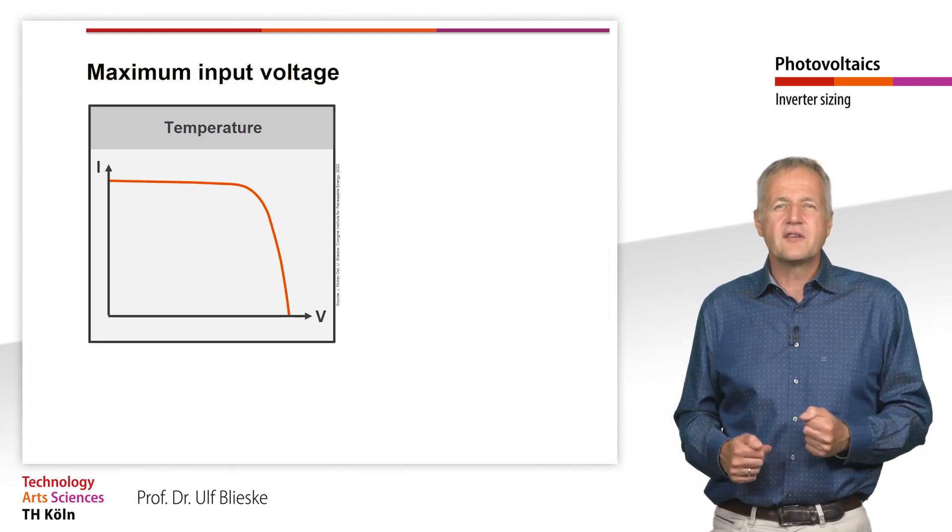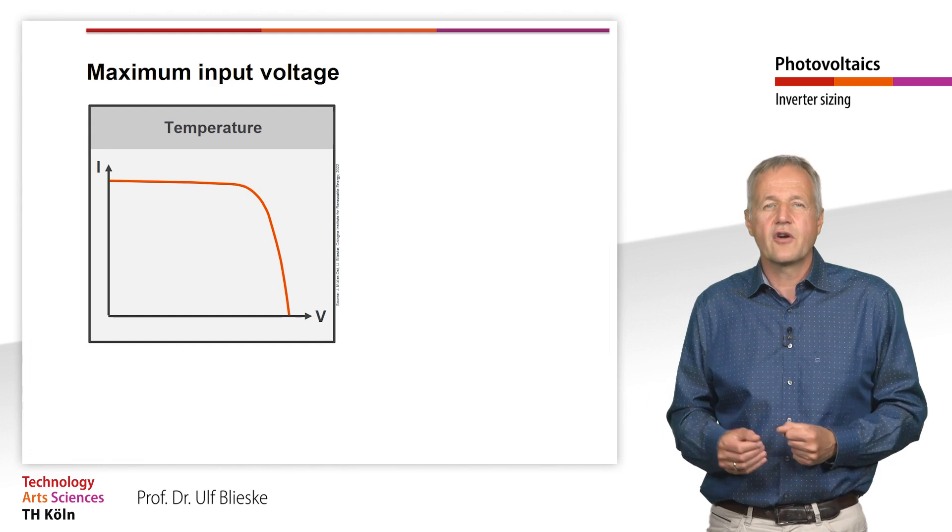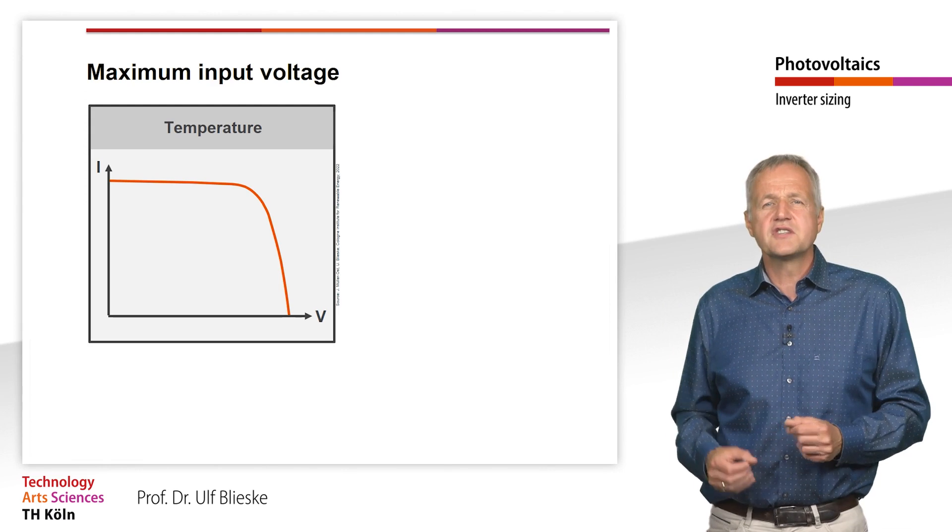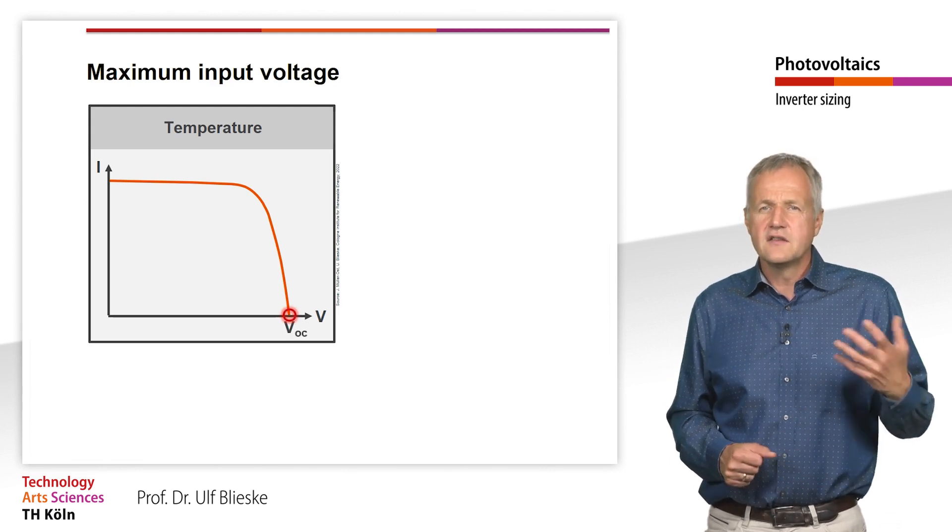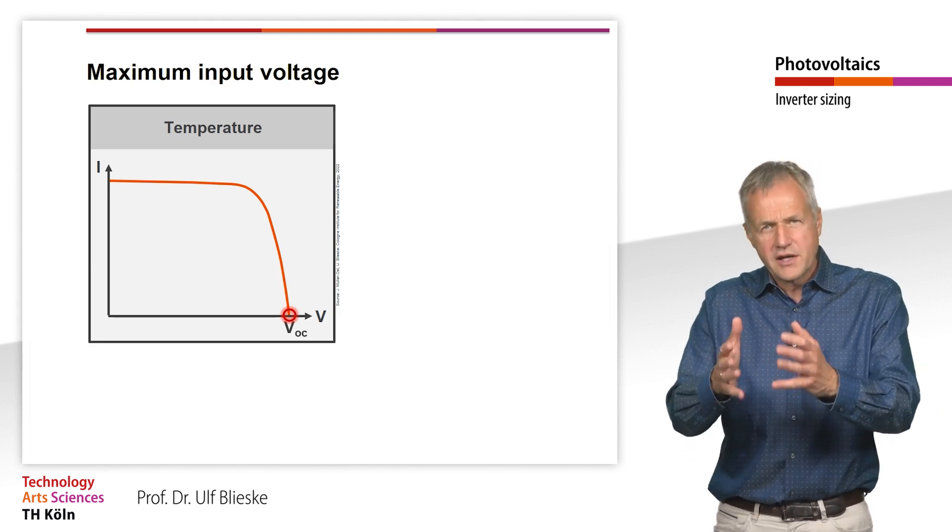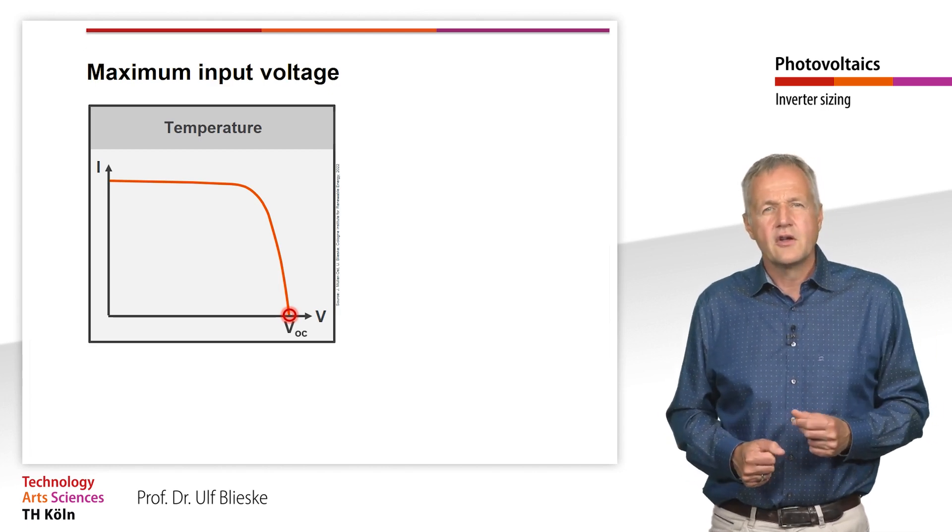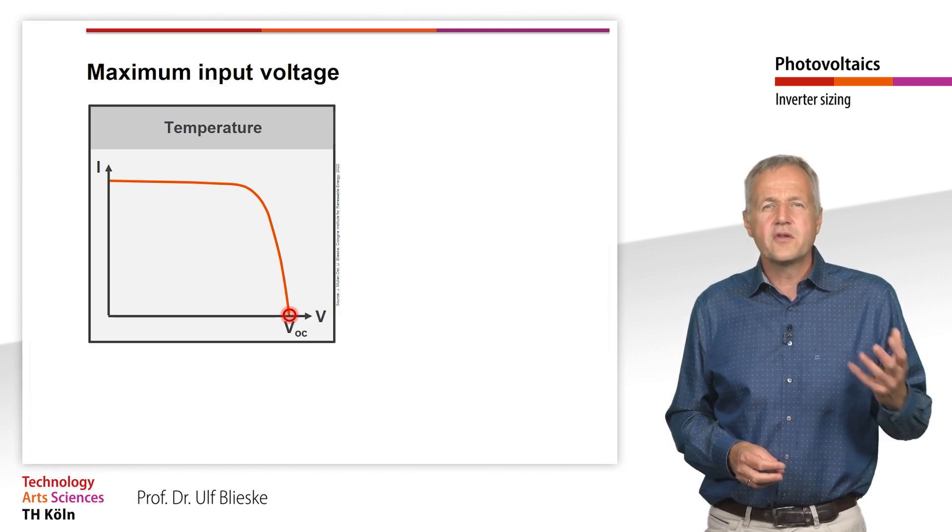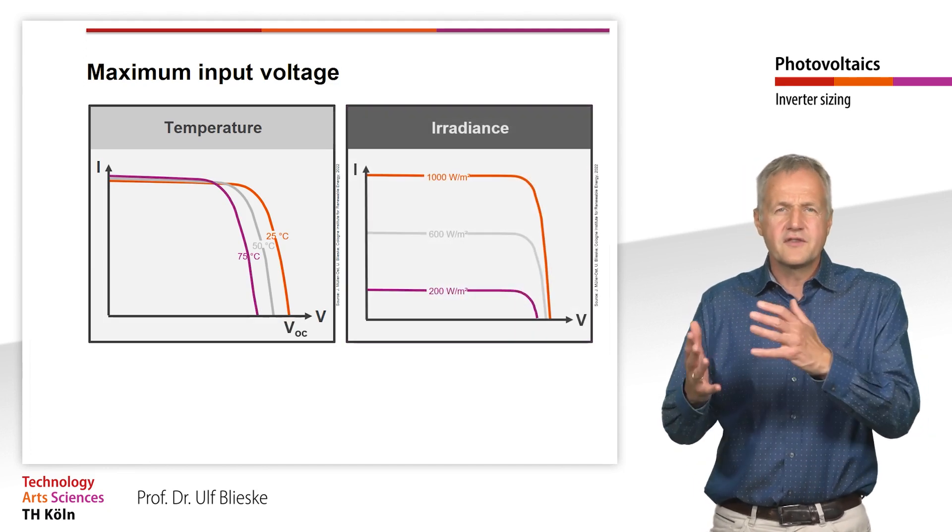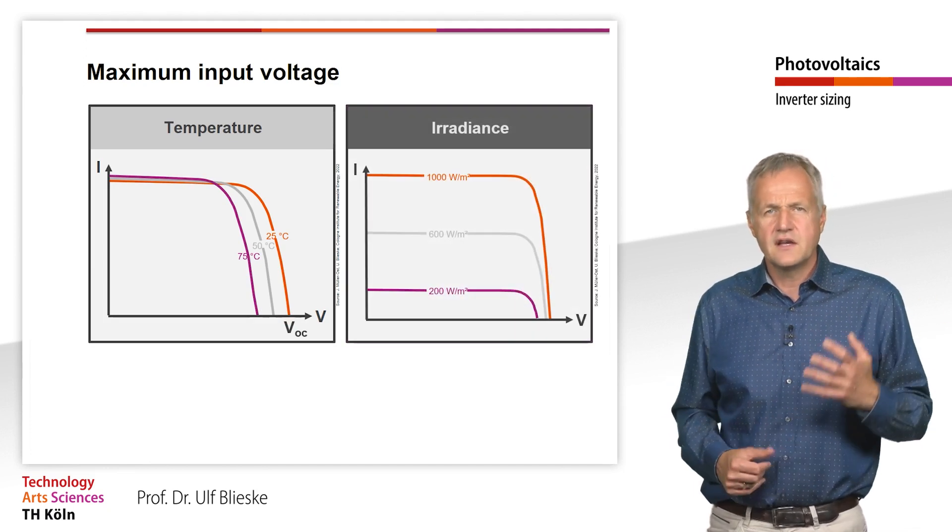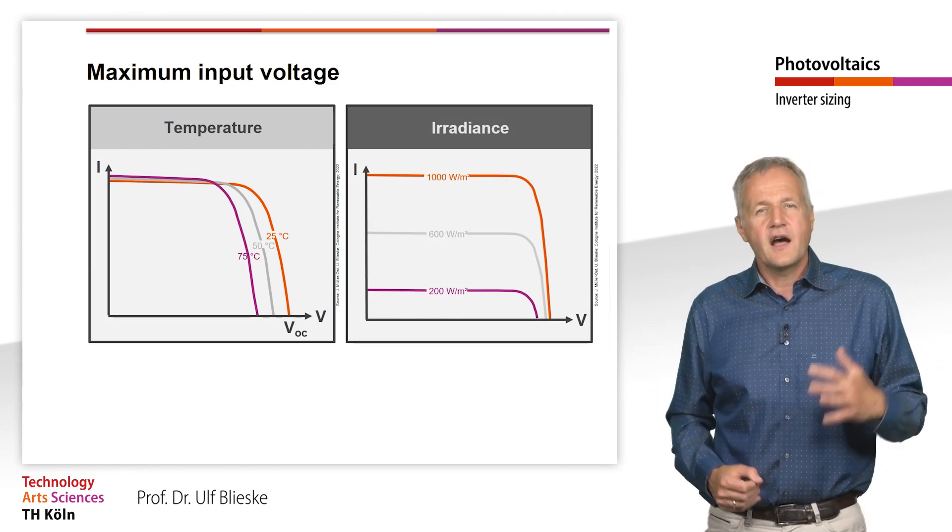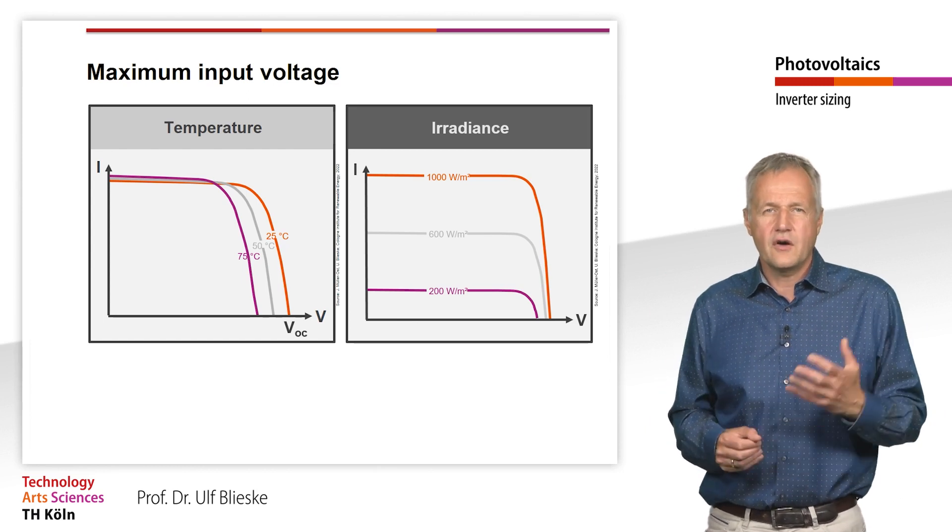For this purpose, let us once again visualize the characteristic curve of a solar module. The highest possible voltage is the open circuit voltage. This voltage is present for example when the inverter cannot feed into the public grid due to a power failure. We have also learned that the open circuit voltage is not constant but changes with both the cell temperature and the irradiance. In general, the lower the cell temperature and the higher the irradiance, the higher the open circuit voltage of the solar generator.